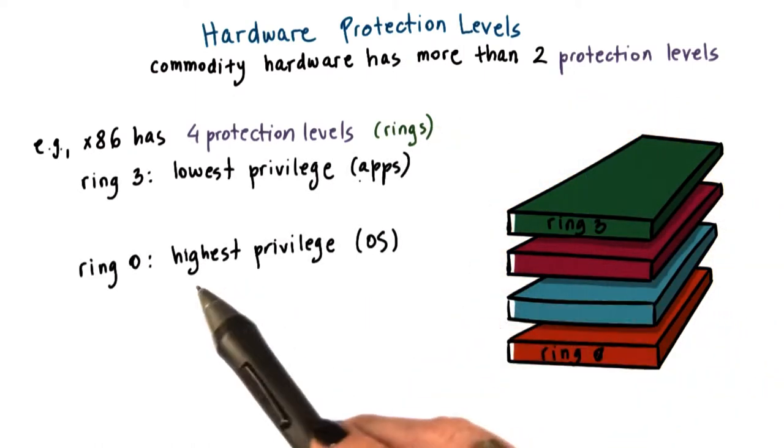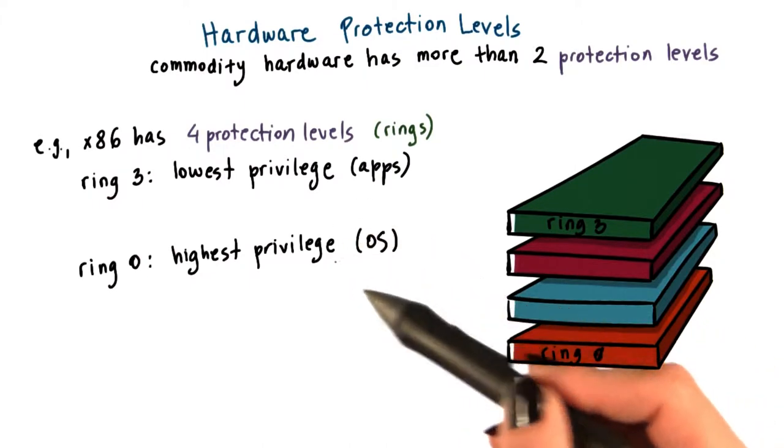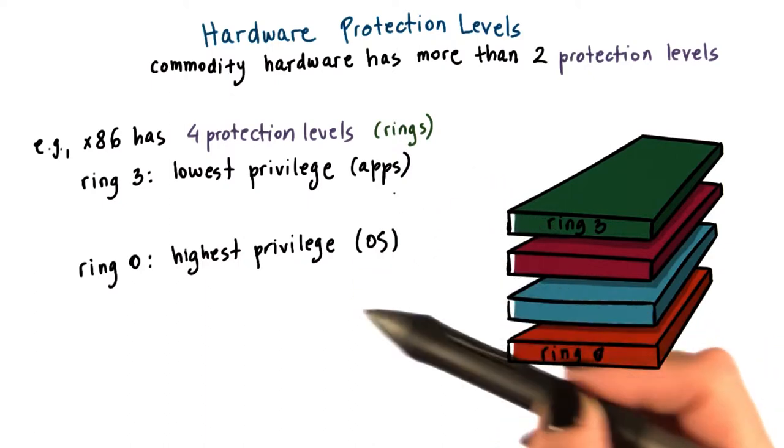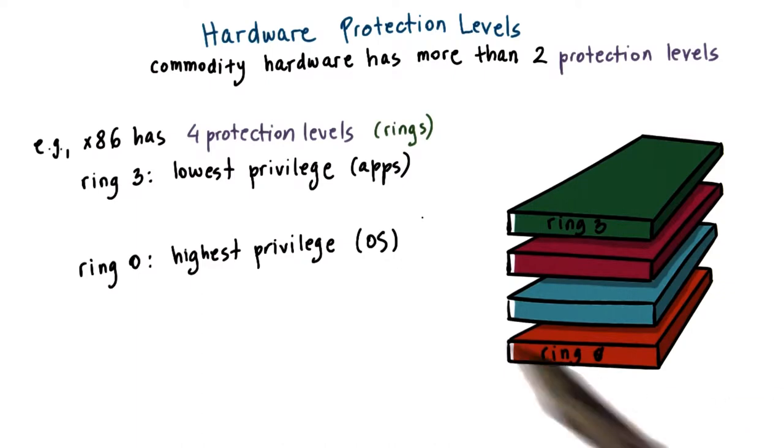Ring zero has the highest privilege and can access all of the resources and execute all hardware supported instructions. This is where in a native model the operating system would reside. So when the OS is in control of all the hardware resources, it sits in ring zero.